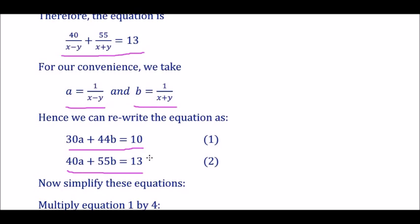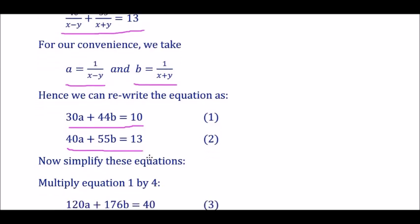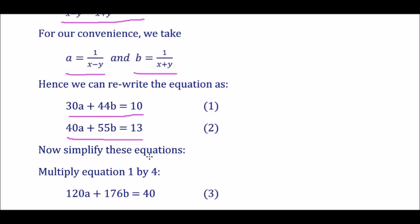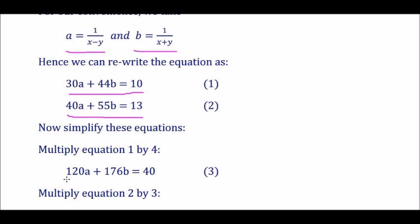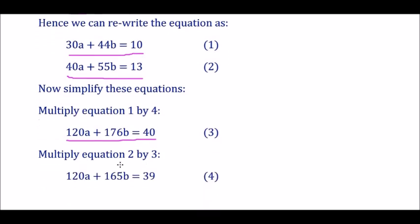Now simplify these equations. Multiply Equation 1 by 4 to get 120A + 176B = 40, marked as Equation 3. Multiply Equation 2 by 3 to get 120A + 165B = 39, marked as Equation 4.